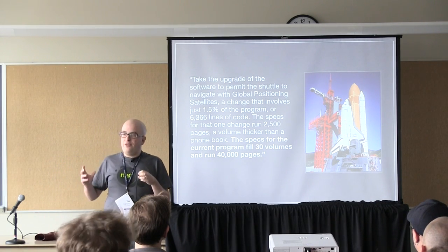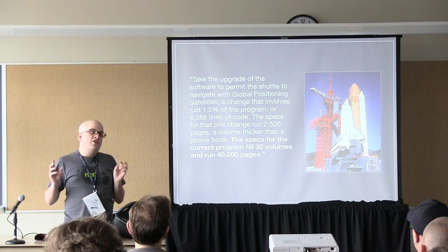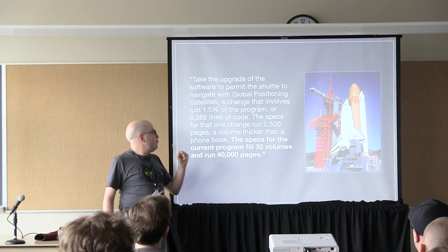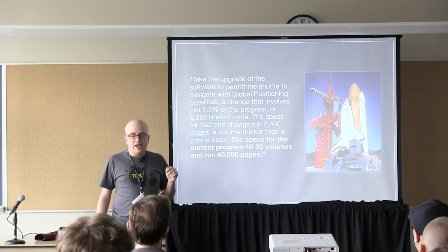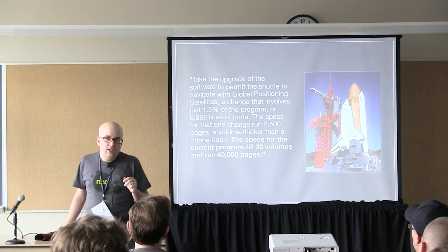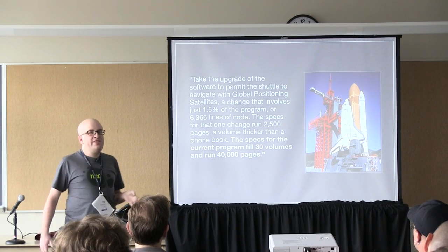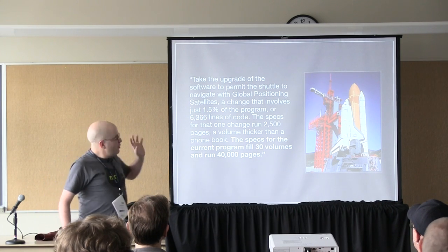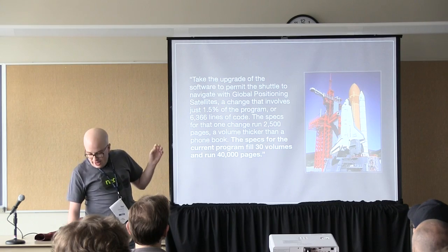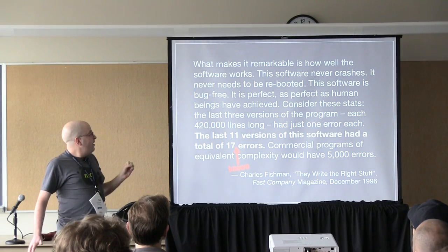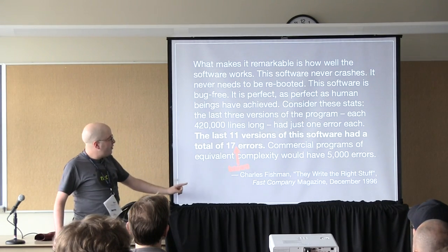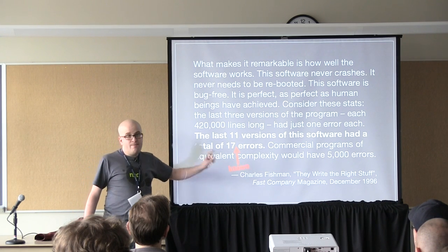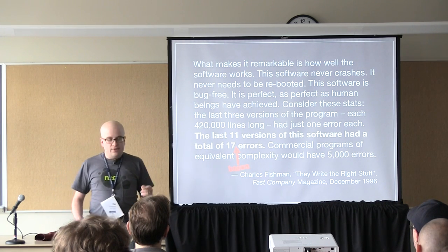If you're looking for tips about how to write software that is this bug free, be warned that you may not want to. The specs for the current program fill 30 volumes and run to 40,000 pages. This is the opposite of Agile — this is more waterfall than Niagara Falls. And even after doing this, they still had 17 known errors. There may have been other bugs they didn't catch.